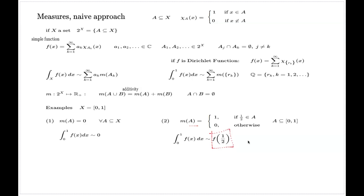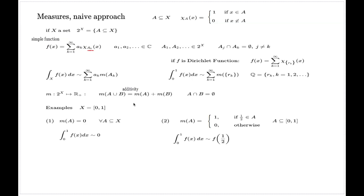This is relatively easy to verify: when you consider a simple function, the point 1/2 will be a member of only one set A_K because they are all pairwise disjoint. The integral then returns exactly the coefficient a_K for which the set A_K contains the point 1/2. This example is called a point measure, focused at the point 1/2.